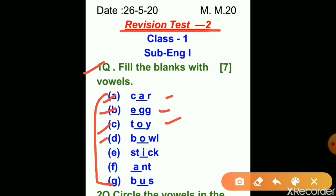In part D: B-O-W, bow — here vowel O is filled. In part E: S-T-I-C-K, stick — here vowel I is filled. In part F: A-N-T, ant — here vowel A is filled. In part G: B-U-S, bus — here vowel U is filled. Match it with your answers.